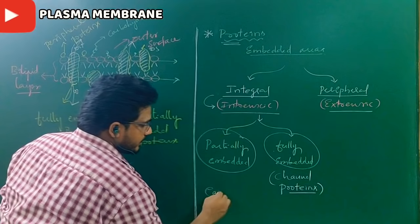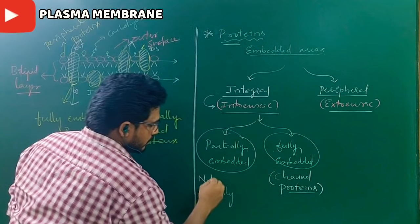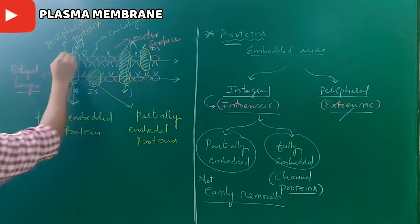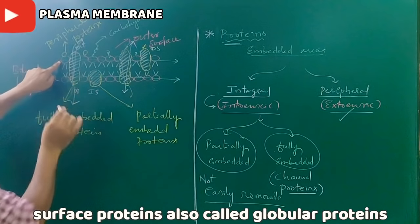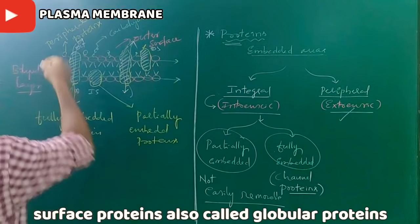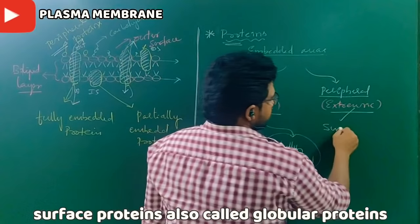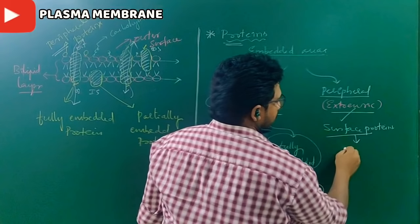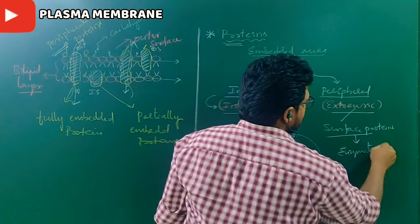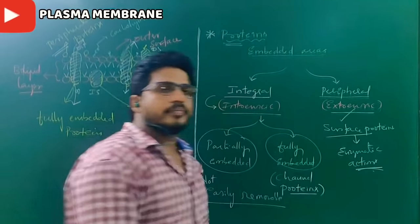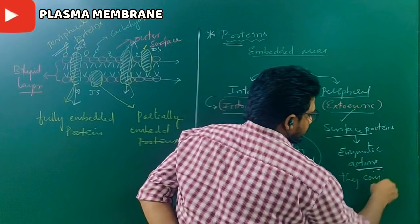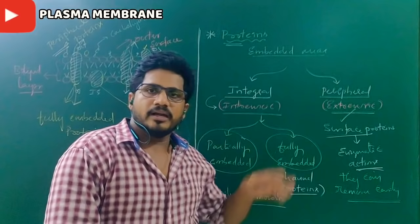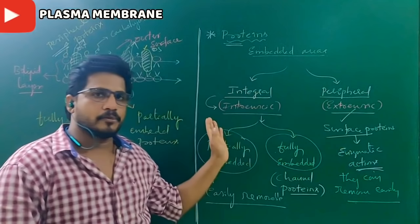On the other hand, peripheral proteins are also called external or surface proteins. They are present only on the outer surface and are not embedded or integrated with the cell membrane. Surface proteins have enzymatic actions. They are easily removable. These are the differences between integral proteins and peripheral proteins, or intrinsic and extrinsic proteins.